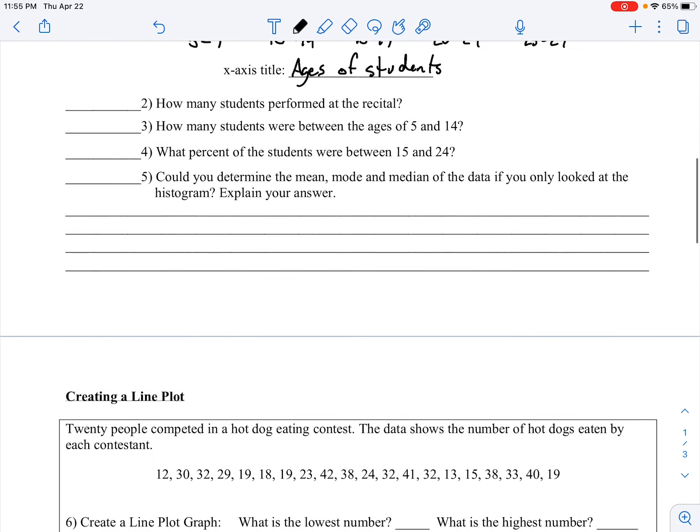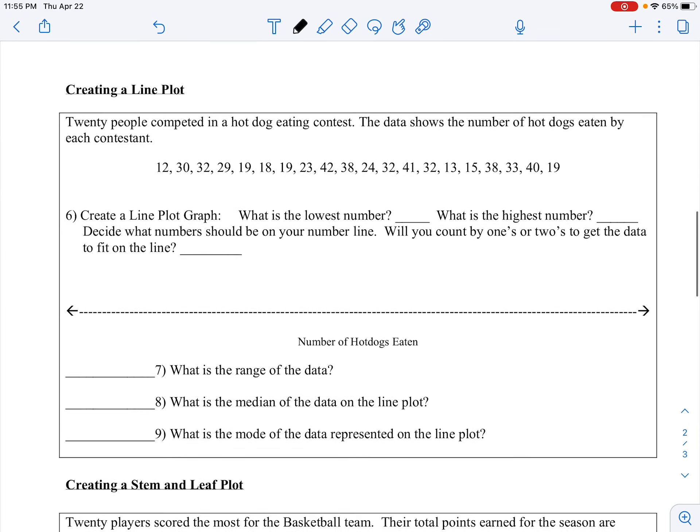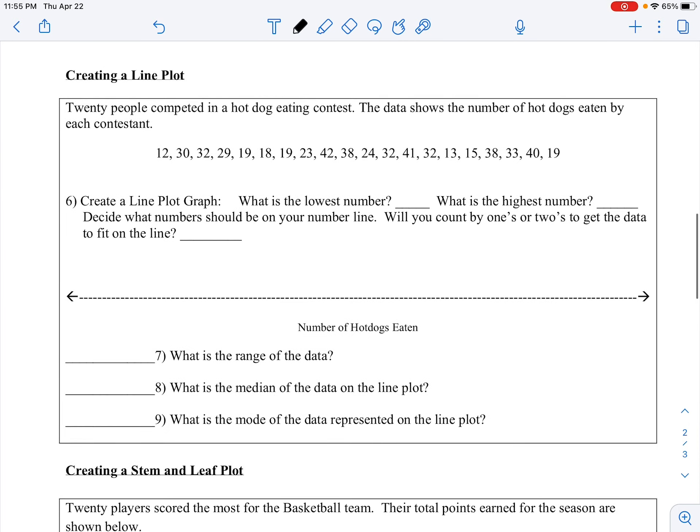After you've paused and answered these, we're going to create a line plot. The information we get is 20 people competed in a hot dog eating contest, and this data shows the number of hot dogs eaten by each contestant. I'm going to help you out with the first question and creating our line plot. What's the lowest number we have? I see a 12, so let's make sure we don't have anything smaller than 12, and it looks like that's our smallest number.